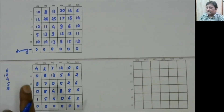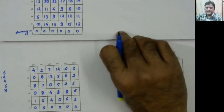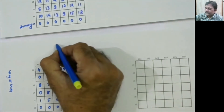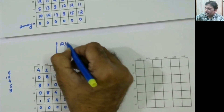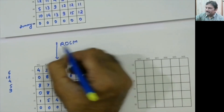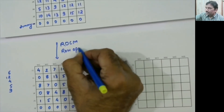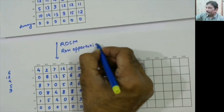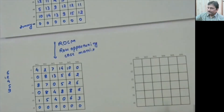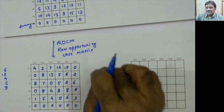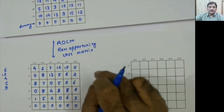This process is called row reduction, and the resulting matrix is called ROCM — Row Opportunity Cost Matrix. It tells you the opportunity cost or penalty for not using the cheapest assignment. For example, J1 should ideally be assigned to M6 (opportunity cost 0). If assigned to M5 instead, the opportunity cost is 10; if assigned to M4, it is 14.